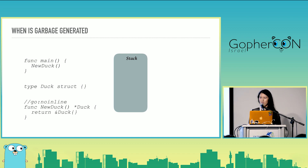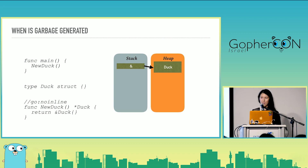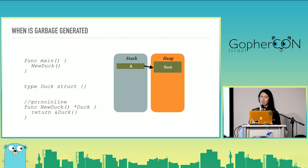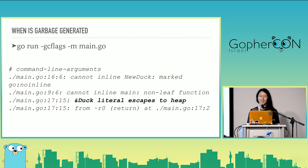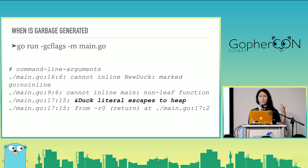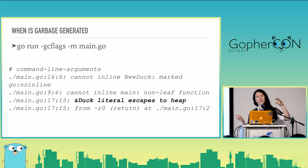If I change this example very slightly — now we're returning a pointer to the duck rather than just the duck value — this actually goes to the heap. The 'go inline' directive just prevents the compiler from doing fancy inlining. When that gets cleaned up, the pointer goes away but the duck object stays around — and now we have garbage. I can see this behavior by running my program with the GCflags option, which shows the compiler's escape analysis. The escape analysis determines what goes to the stack versus the heap. As much as possible, Go optimizes to put things on the stack, but in this case the pointer has to go to the heap.